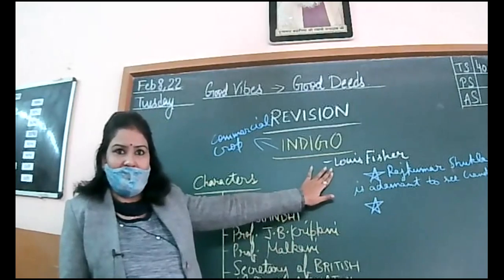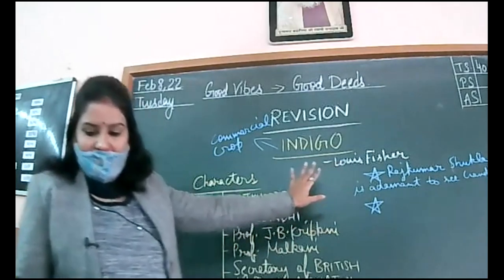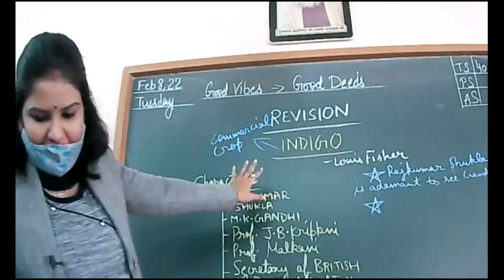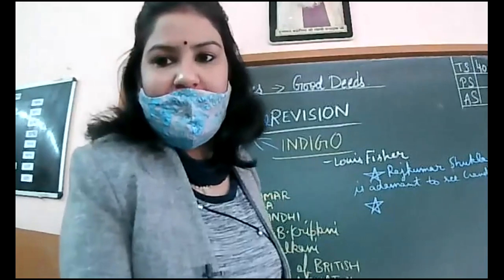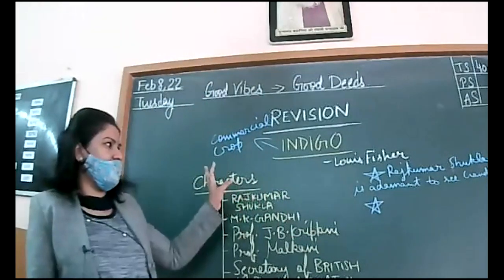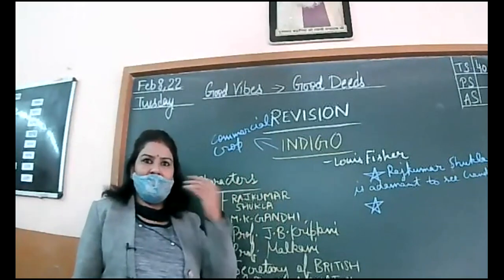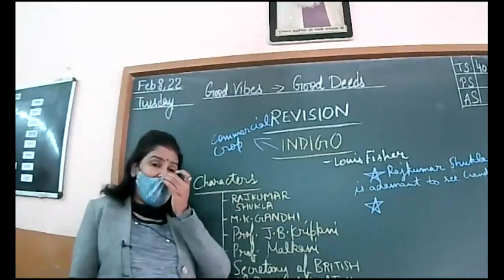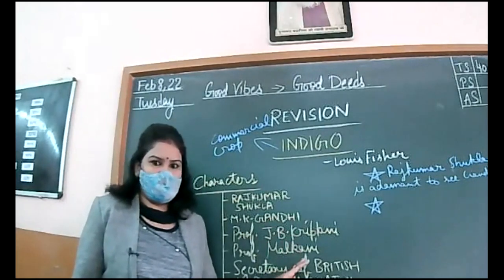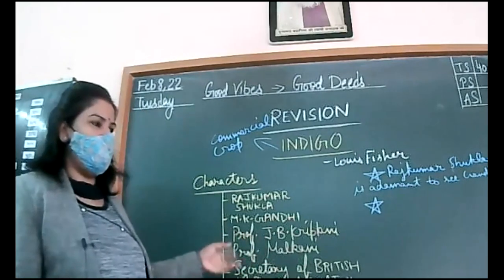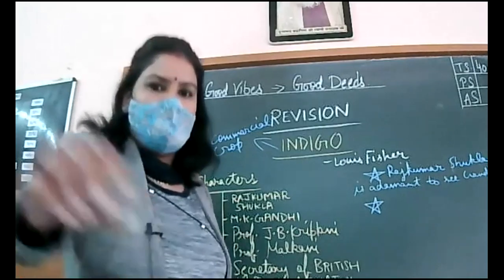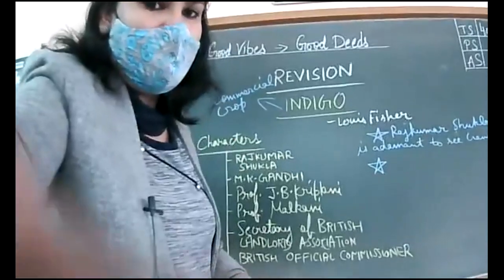The chapter is written by Louis Fisher. You should know the name of the writer. Louis Fisher served as a volunteer in the British army and he has seen everything closely. This chapter is like a direct conversation — Gandhi's interview was taken and out of that the chapter is written. So there is a lot of factual, true information in it; this is nothing like fiction.